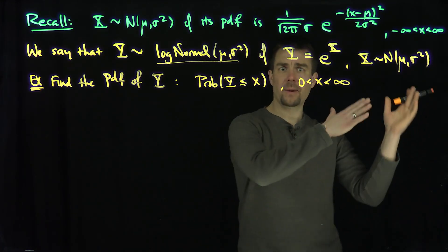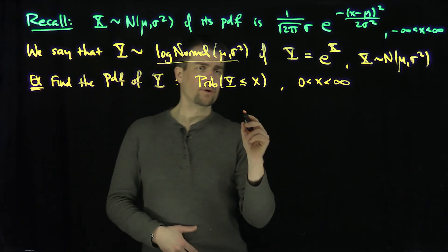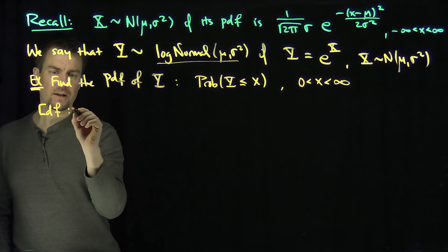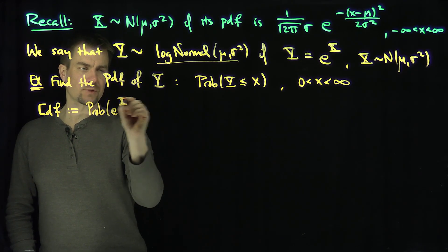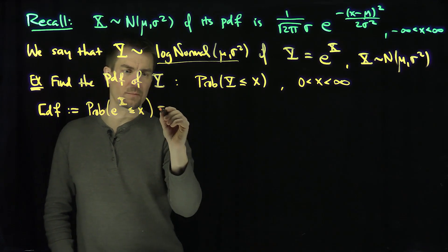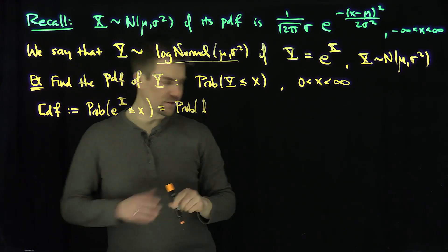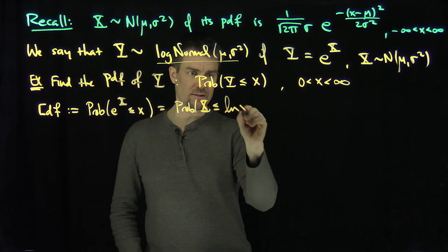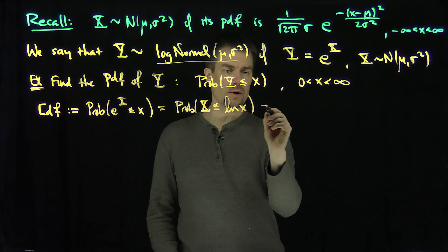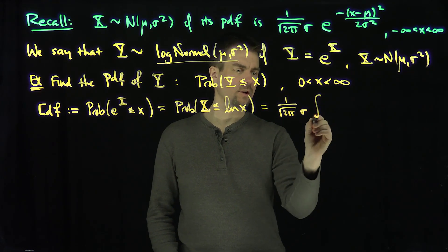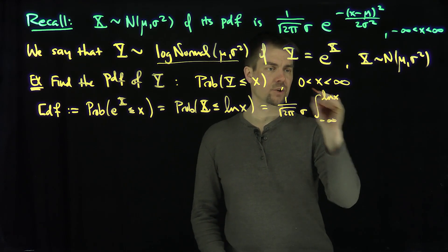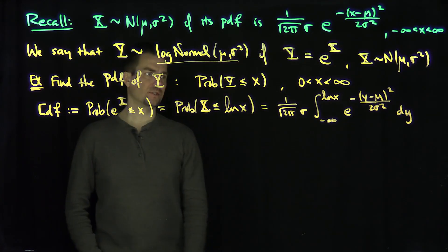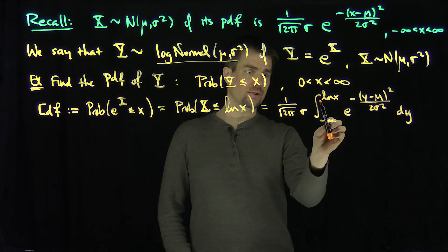The CDF is the probability that e to the x — because that's what y is — is less than or equal to x. Taking the log of both sides, this is the probability that x is less than or equal to the natural log of x. Using the fact that x is normally distributed, this equals 1 over the square root of 2 pi sigma, times the integral from negative infinity up to log of x of e to the negative y minus mu squared over 2 sigma squared dy. My parameter here is the log of y.